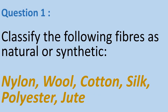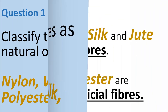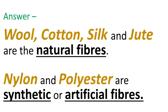Let's start with question number 1. Classify the following fibers as natural or synthetic: nylon, wool, cotton, silk, polyester, and jute. Answer: Wool, cotton, silk, and jute are the natural fibers, whereas nylon and polyester are synthetic or artificial fibers.